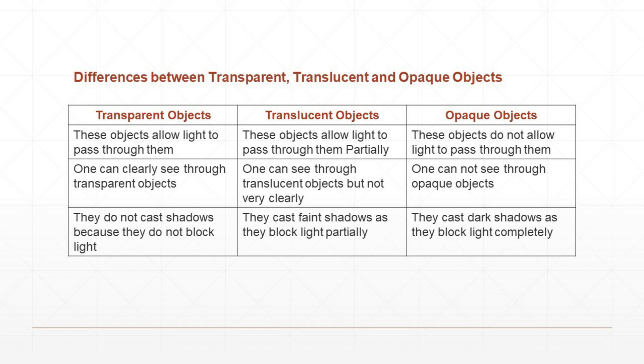The third important characteristic: transparent objects do not cast shadows because they do not block light — all the light passes through and no shadow is formed. Translucent objects cast a faint, blurred shadow because some amount of light passes through them — they block light partially. Opaque objects cast dark shadows because they block light completely.